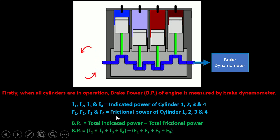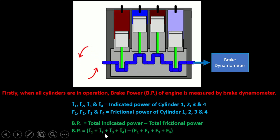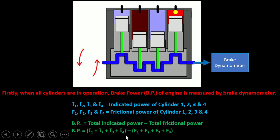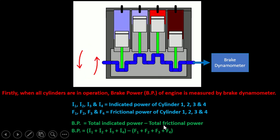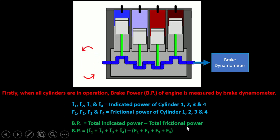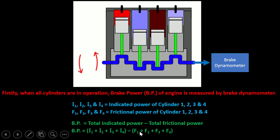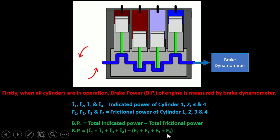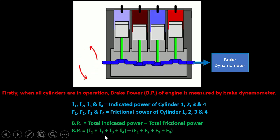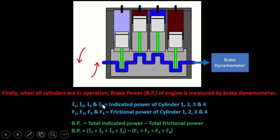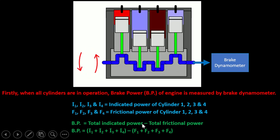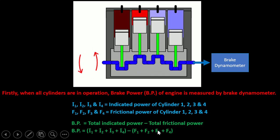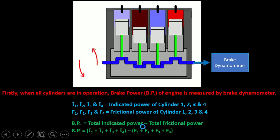We can write total indicated power as I1 + I2 + I3 + I4, and total frictional power as F1 + F2 + F3 + F4. So brake power of the engine equals total indicated power minus total frictional power. Remember this formula because we will use it again.